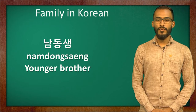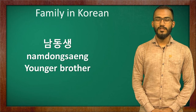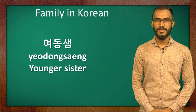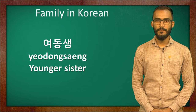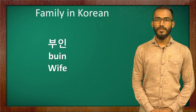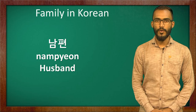For younger brother, it's called 남동생. Any younger sibling is called 동생. For younger brother it's 남동생, and younger sister is 여동생. For wife, the Korean word is 부인. And for husband, the Korean word is 남편.